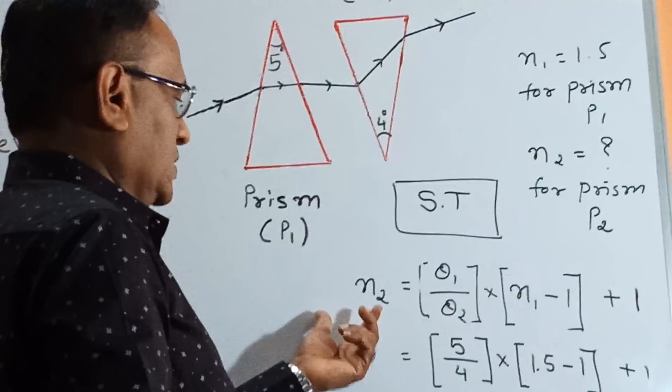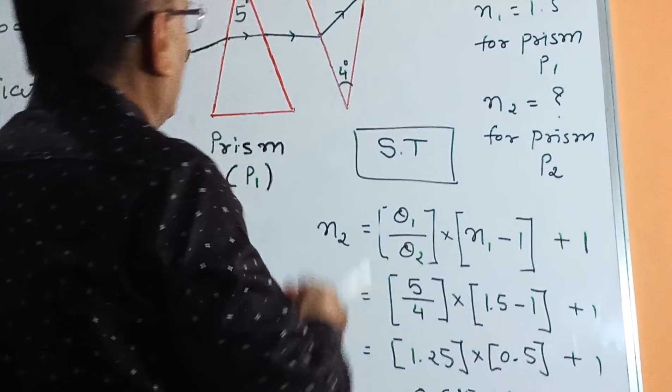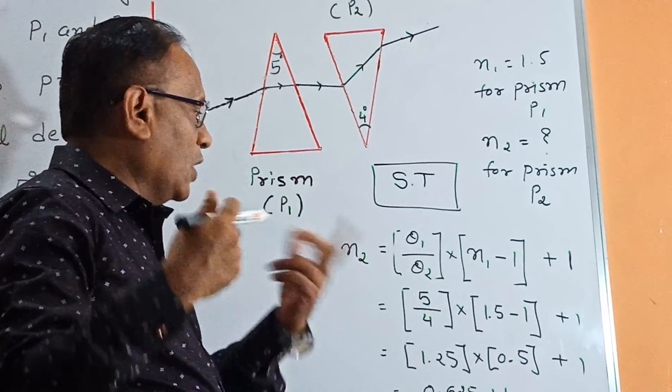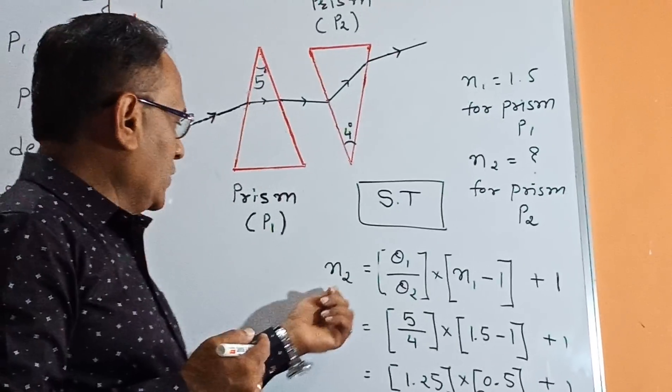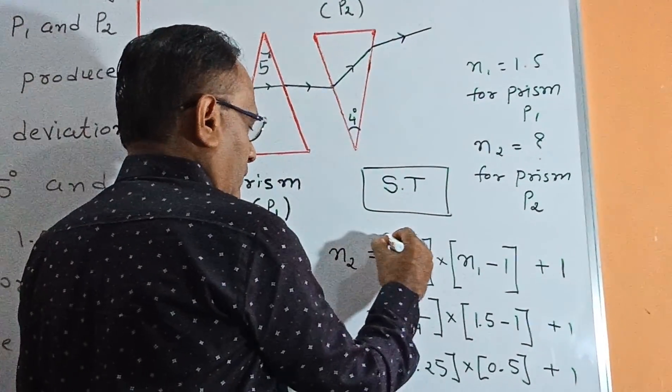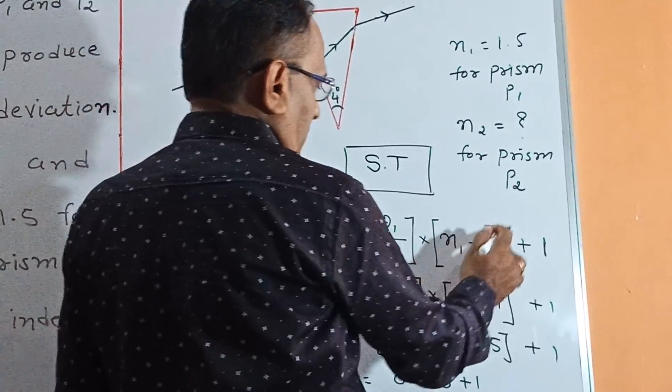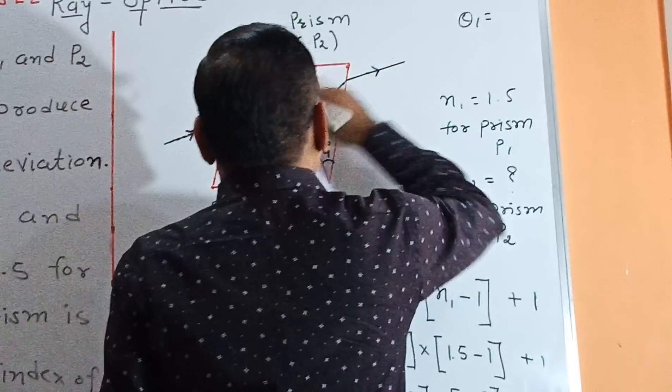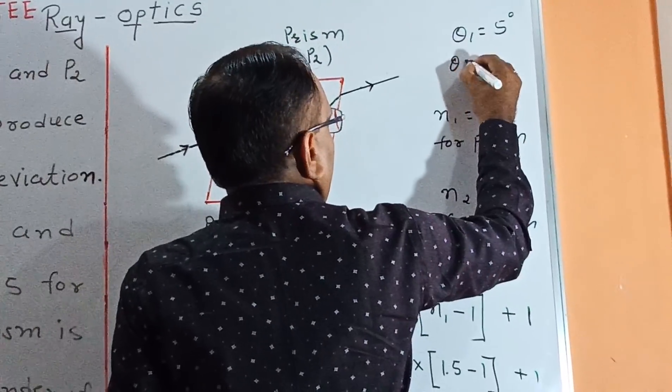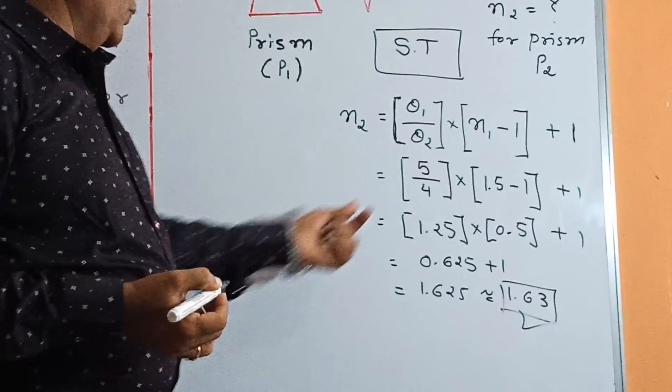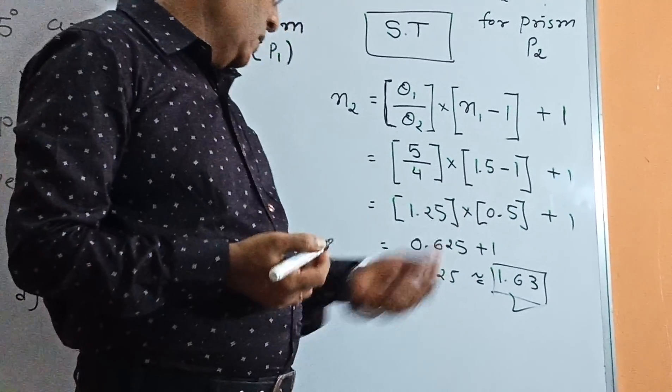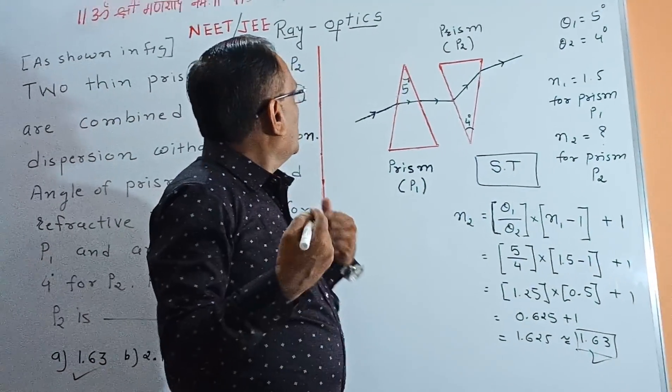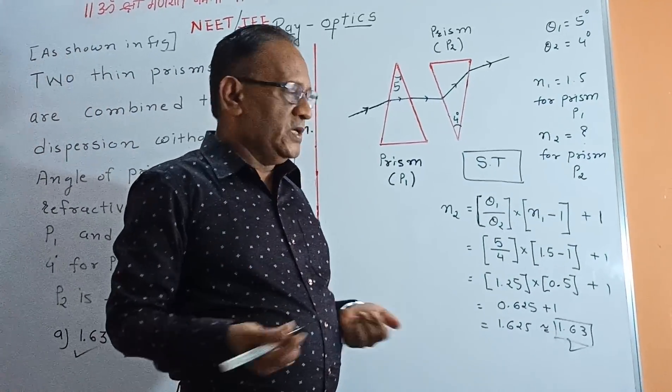This is the best short trick for solving it easily. You save your time and it is suitable for all types of students. N2 equals theta1 by theta2 into N1 minus 1 plus 1. Theta1 is 5 degrees for prism P1, theta2 is 4 degrees. Put these values and simplify to find the answer. I put many short tricks in my videos, so please subscribe to my channel.